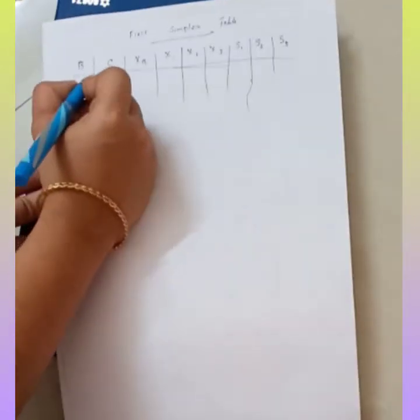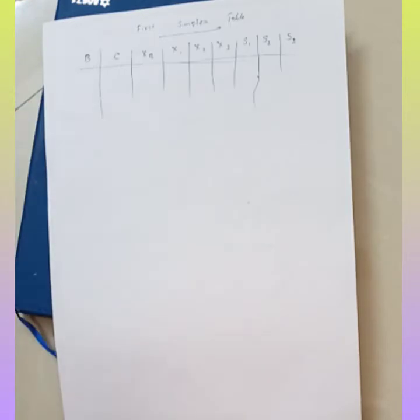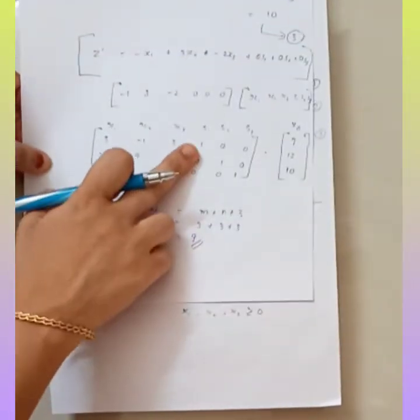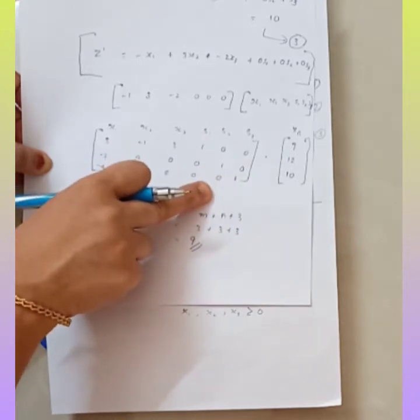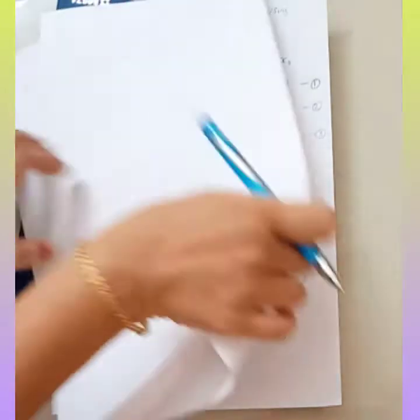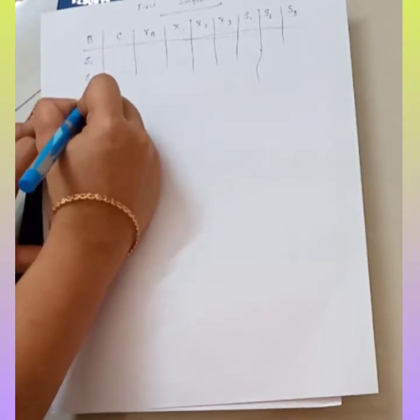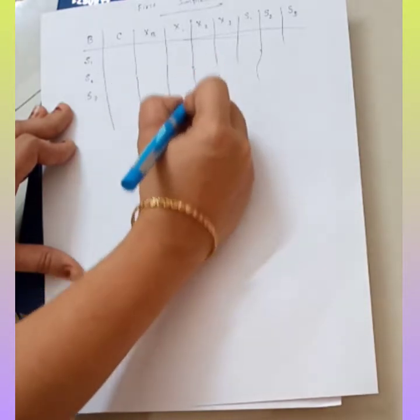Here, first is the basic variable. The basic variable will have the unit vector as their coefficient. So if you take this particular problem, you can see that our slack variables are the basic variables in the first simplex table. You can write slack variables S1, S2, and S3 because their coefficient is actually the unit matrix or unit vector.